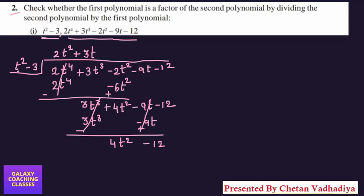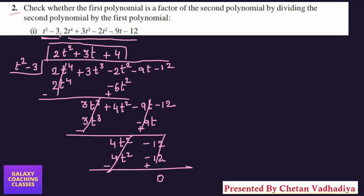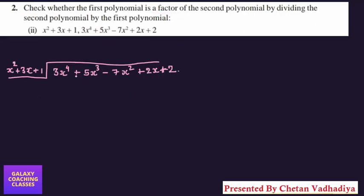Now we multiply 4 by t² to get 4t², and 4 by –3 to get –12. After changing signs, everything cancels and the remainder is 0. Since the remainder is 0, the first polynomial t²–3 is a factor of the second polynomial. Yes, it is a factor.